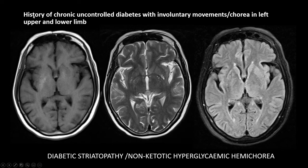We will also see a related condition: chronic uncontrolled diabetes with involuntary movements — chorea — in the left upper and lower limb. On MRI, T1 hyperintensities are seen in the right basal ganglia, which are hypointense on T2 and FLAIR. This is classic for diabetic striatopathy or non-ketotic hyperglycemic hemichorea syndrome, where T1 hyperintensities in the basal ganglia contralateral to the side of chorea or hemiballismus are the hallmark finding.